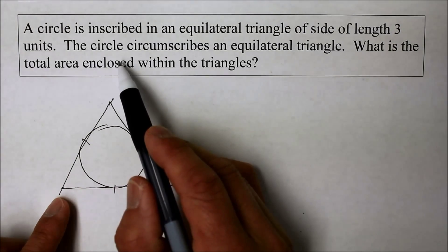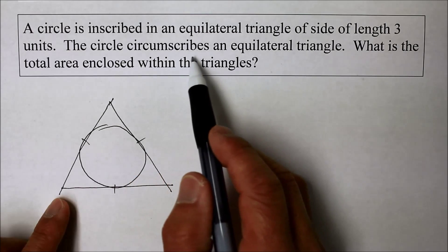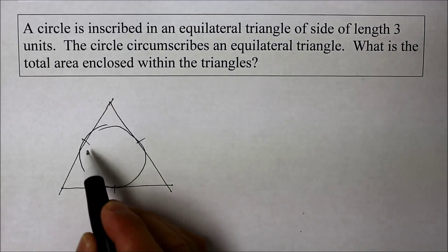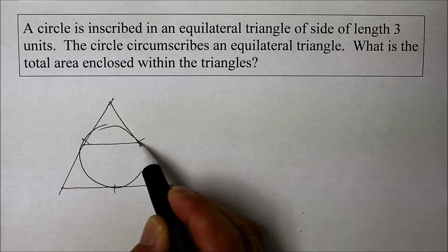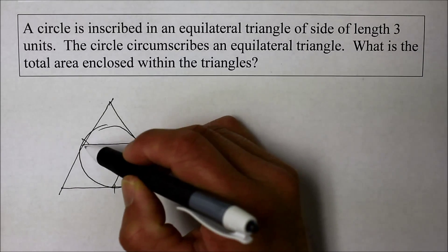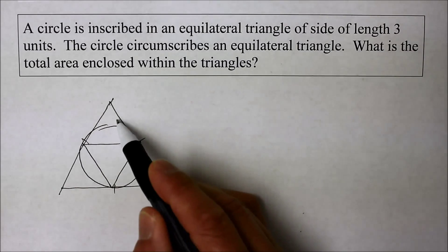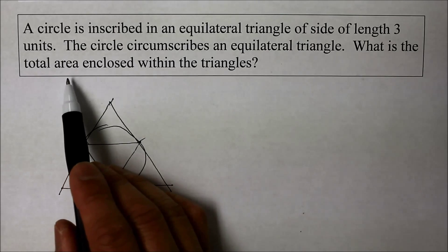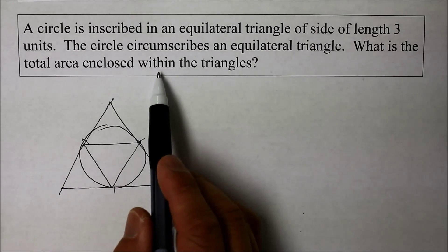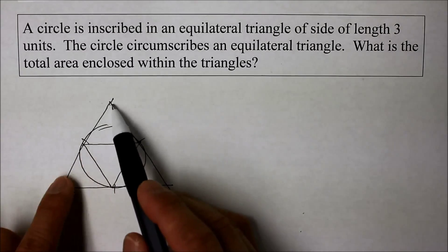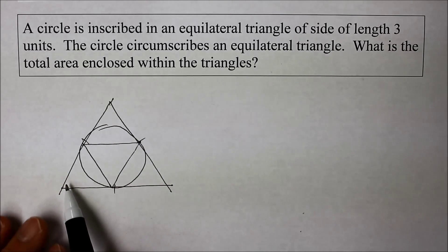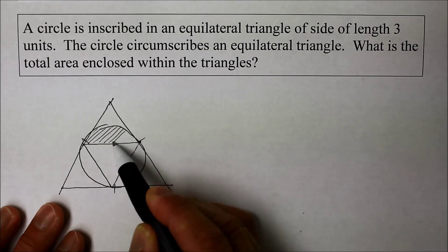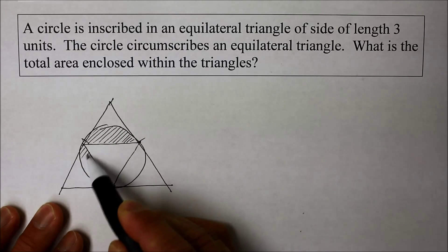Now the circle also happens to circumscribe, go around, another equilateral, just like my previous instructional video, where we have to find the similarity ratio between the big one and the small one. But this time, what they're asking is, what is the total area enclosed within the triangle? So what is not triangle is this right there, this shaded region. And that's what they're asking.